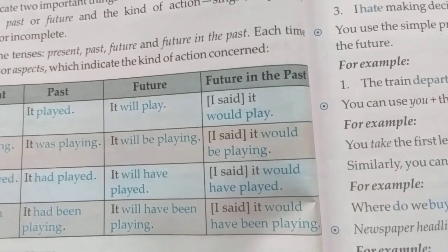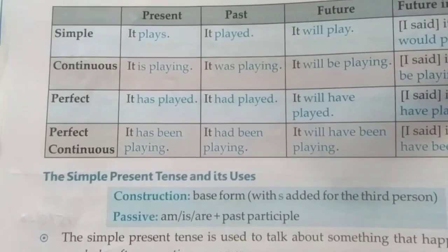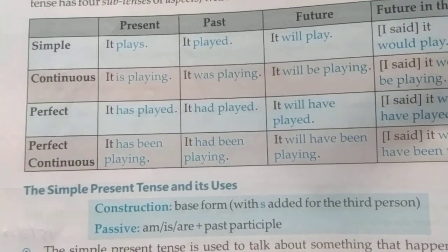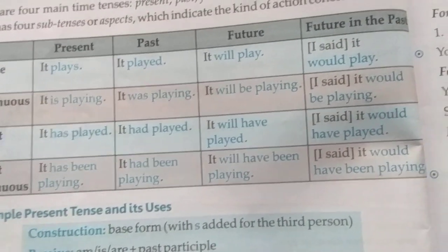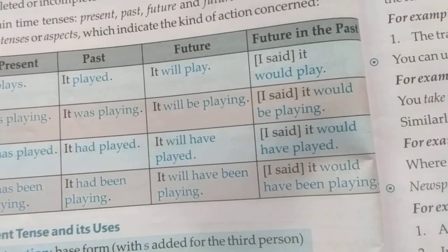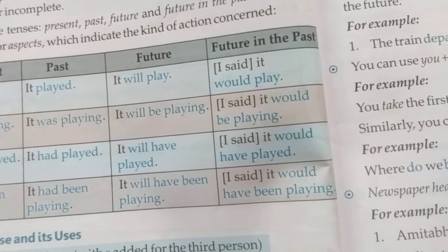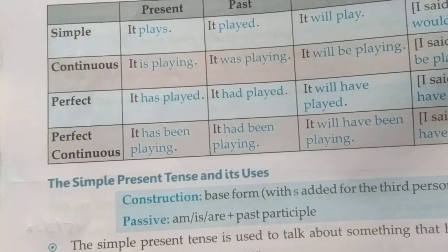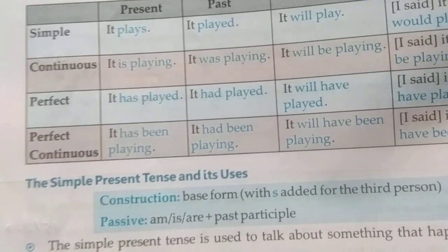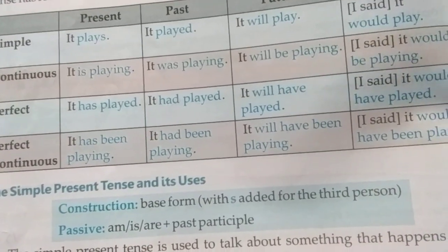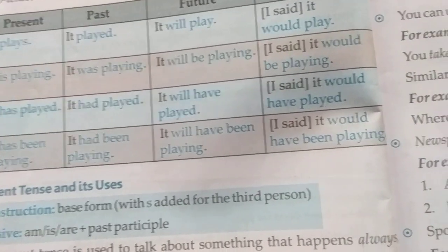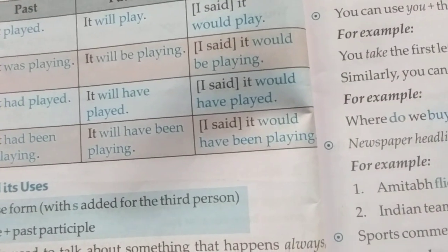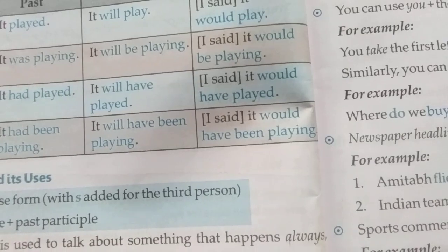Perfect: it has played, it had played, it will have played, it would have played. Perfect continuous: it has been playing, it had been playing, it will have been playing, it would have been playing.